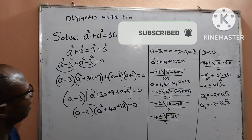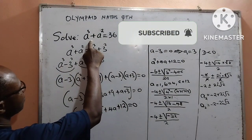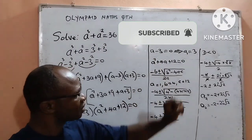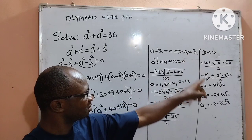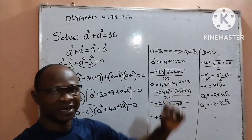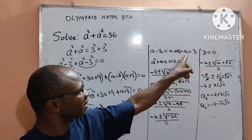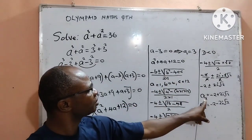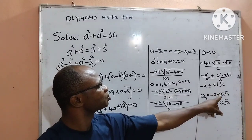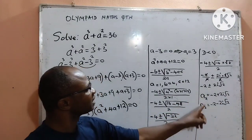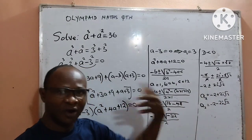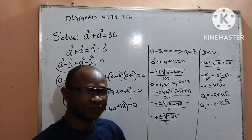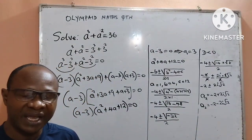In conclusion, in this question that we are given, we have three answers. One is real and two are complex. The first one: A is equal to 3. The second one is a complex root: negative 2 plus 2i root 2. And the third one is also a complex root: negative 2 minus 2i root 2. Thank you for watching the video to the end.